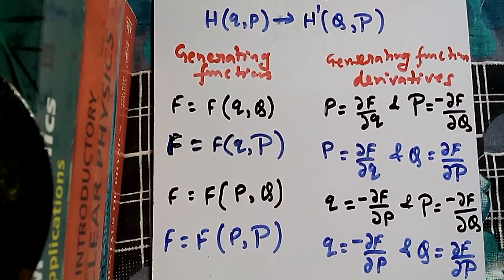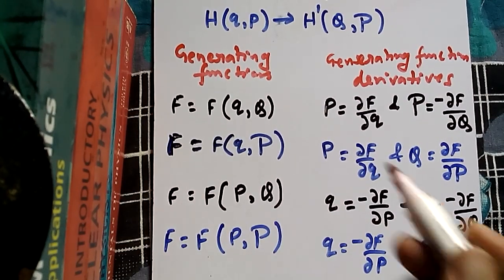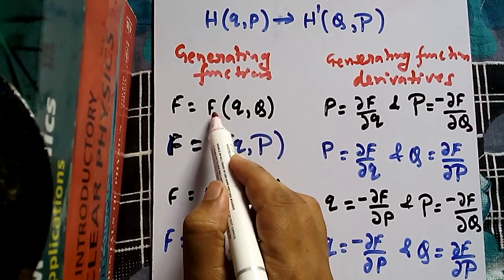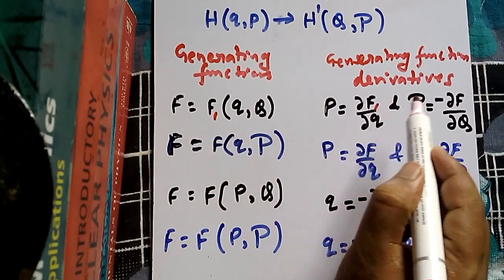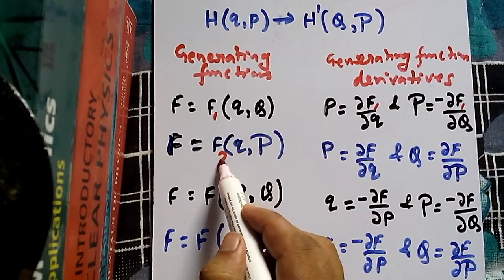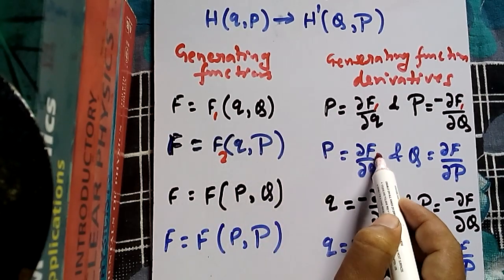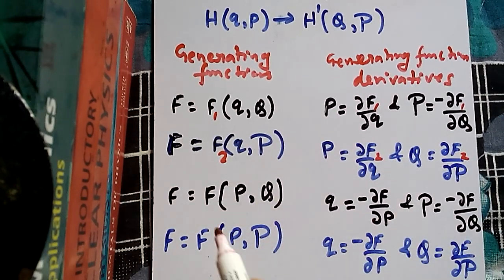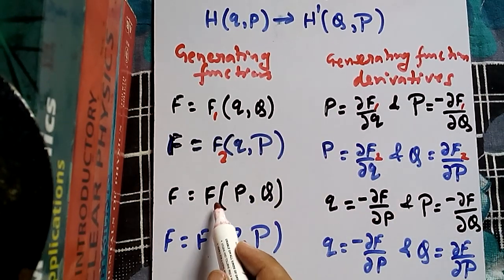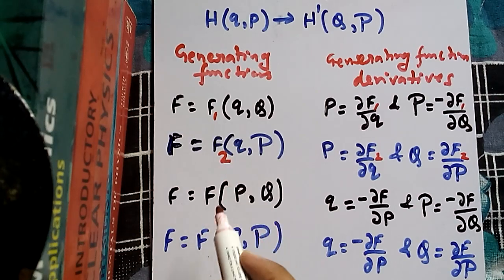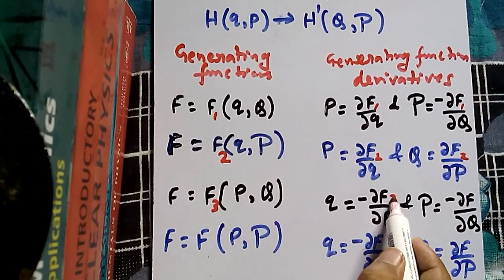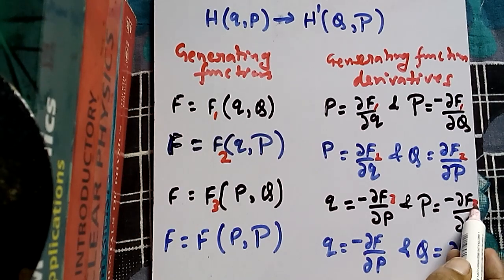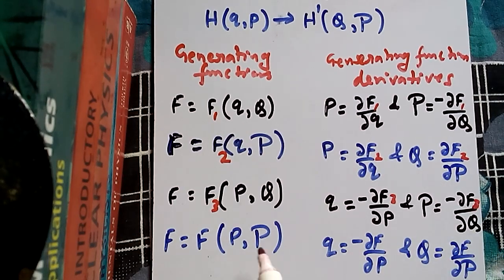Note that capital P always comes with a minus sign and small q always comes with a minus sign — this is the pattern to remember. In some textbooks these generating functions are written as F1, F2, F3, and F4 respectively.